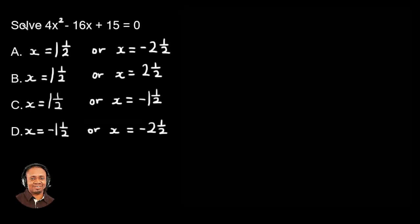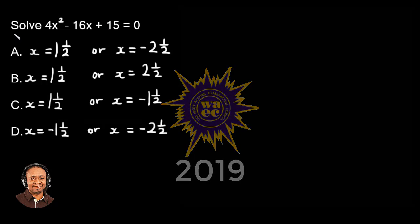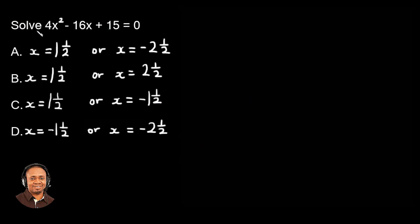Hi, I'm Oluwakemi. I'm so excited to have you here again for another WAEC Math Question 2019. Solve 4x squared minus 16x plus 15 equals 0.